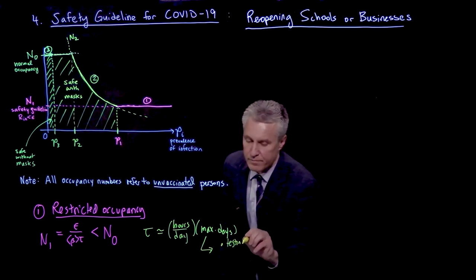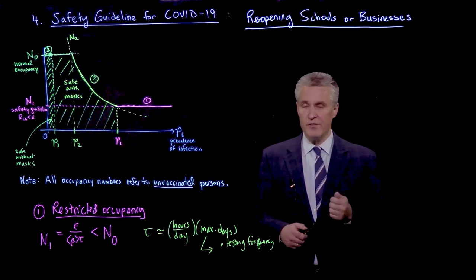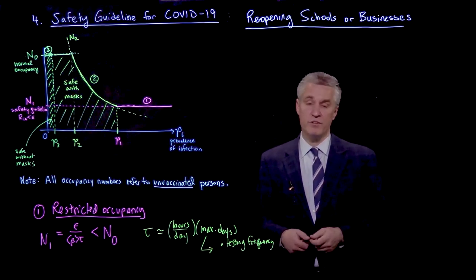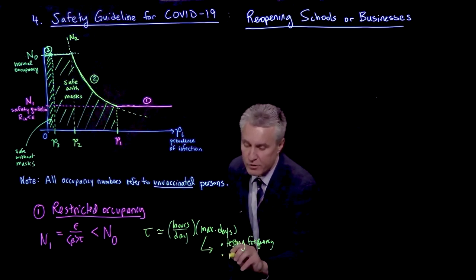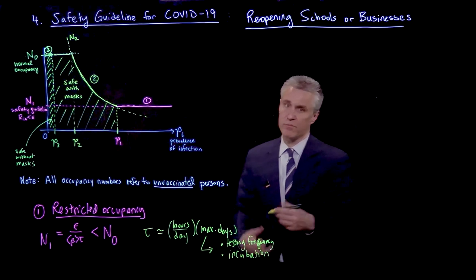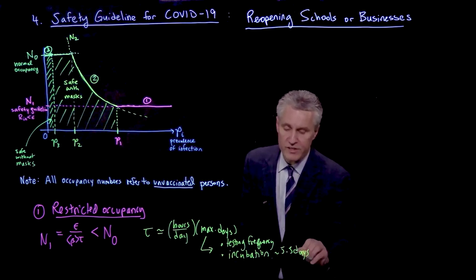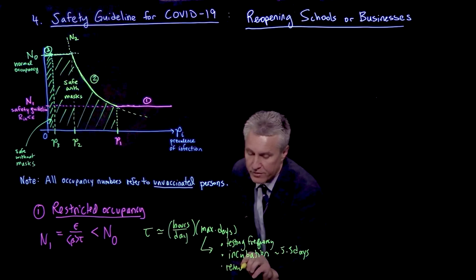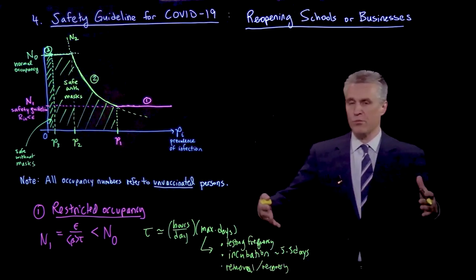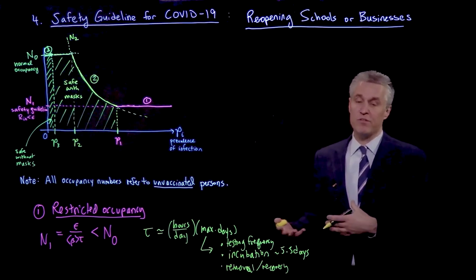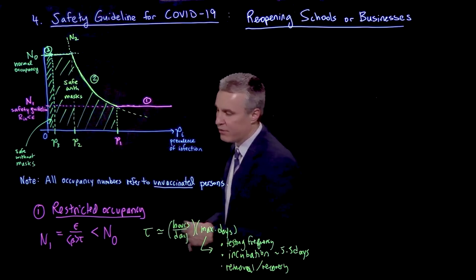Because if we write tau as sort of the typical hours per day times some kind of maximum number of days, this maximum number of days could be set by, for example, the testing frequency. For example, here at MIT, we are testing our entire population at least once a week in order for anyone, including myself, to be admitted to the campus. And so we are definitely testing within a week and catching new infections at that rate. It could also be motivated by the incubation time, which is the time to show symptoms. And most people will remove themselves. And we know that's around 5.5 days, a typically reported value. So again, on the order of a week. And there's also, of course, other ways that people are removed or they recover. So it's removal and recovery, which is another way that if you start to go more than, let's say, two weeks, we start to think an infected person that didn't get removed and ended up in the hospital has probably recovered.